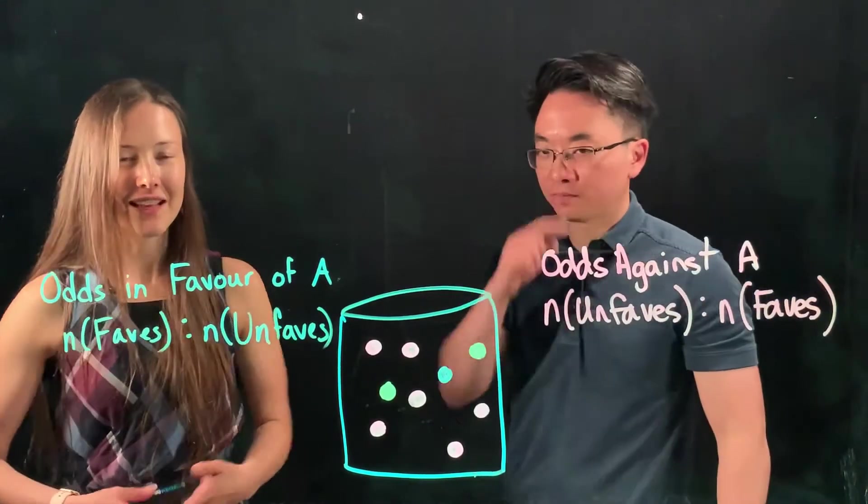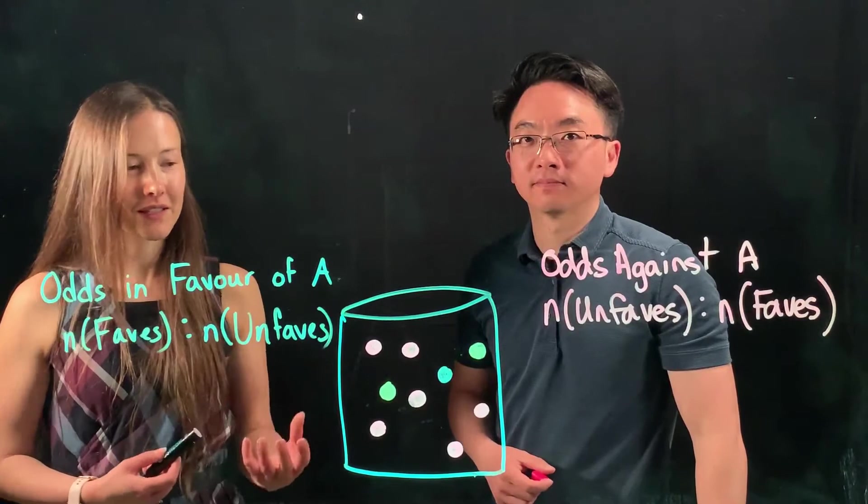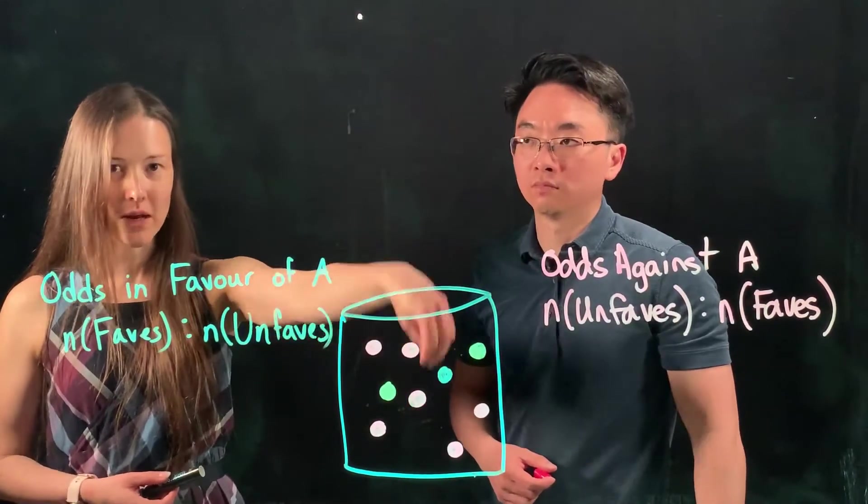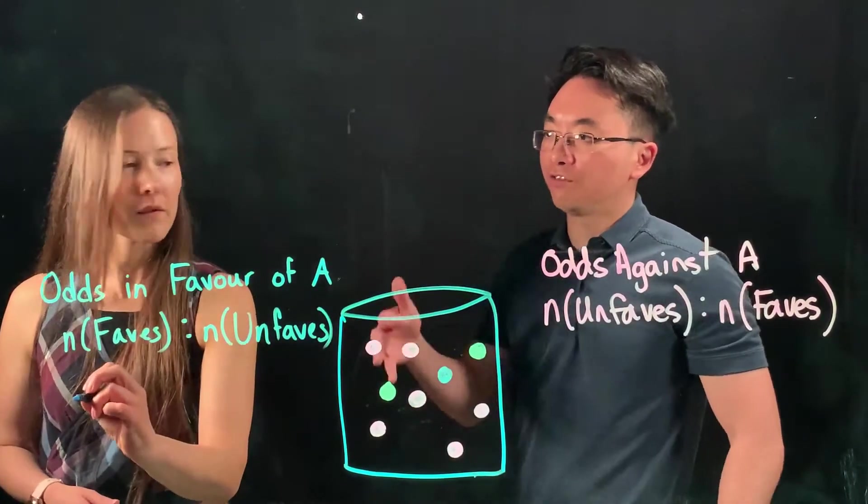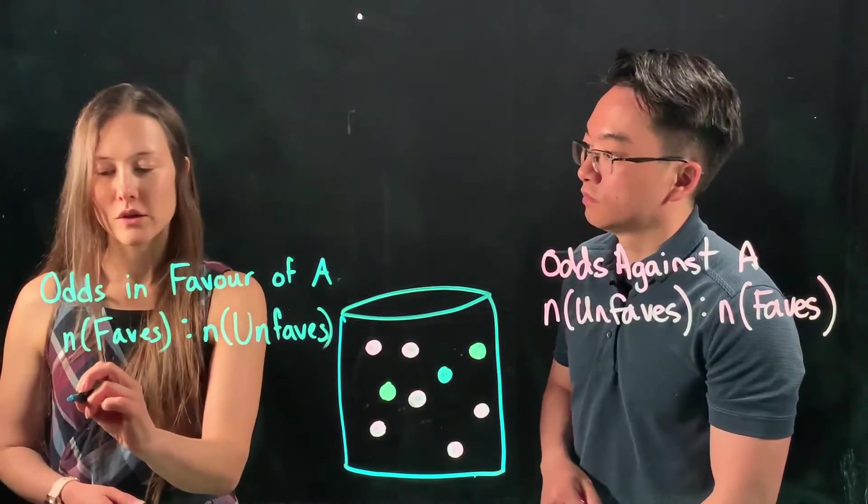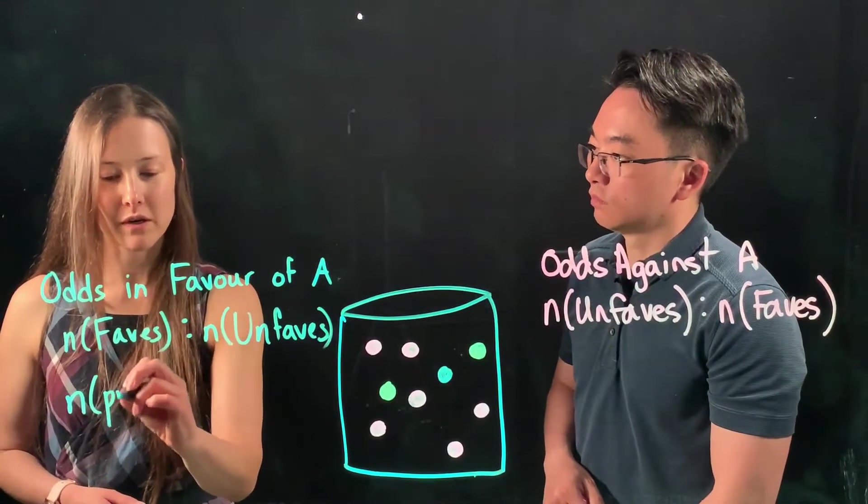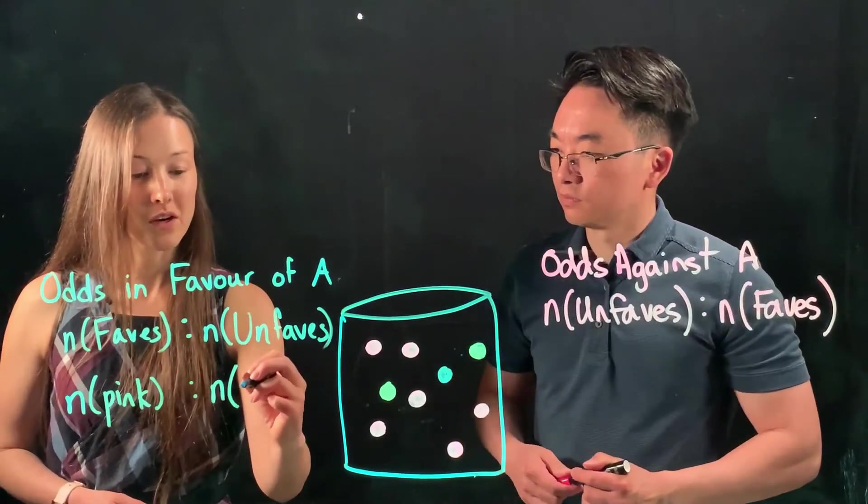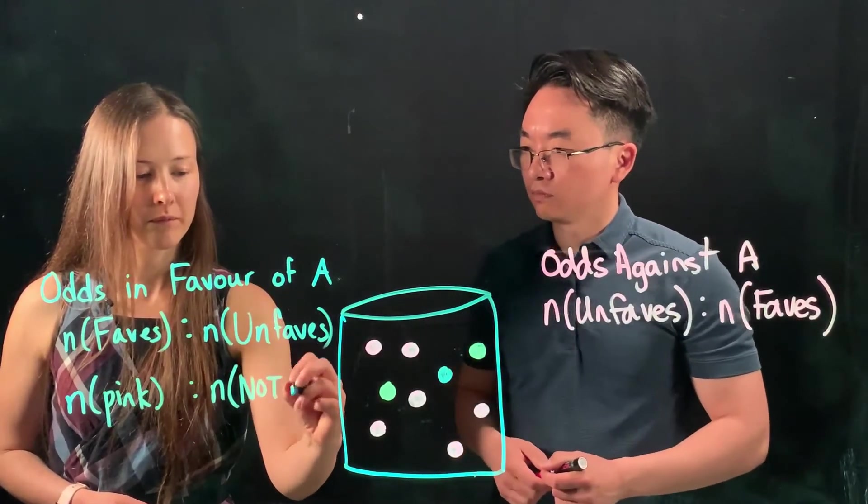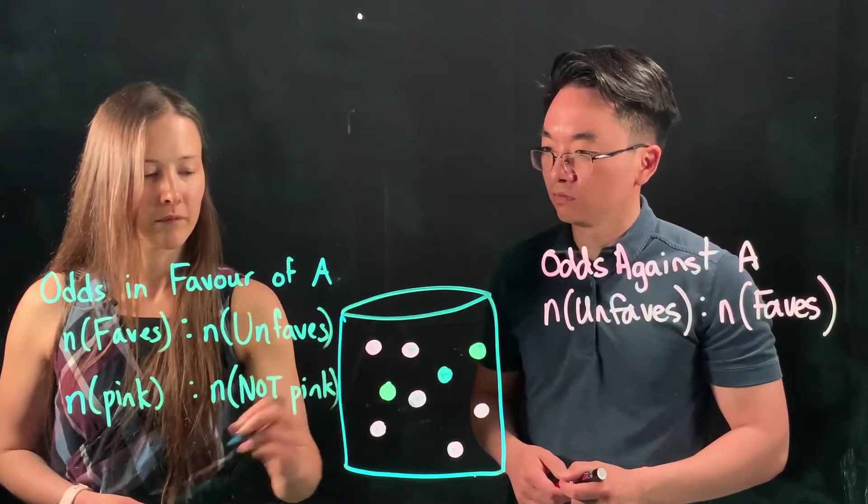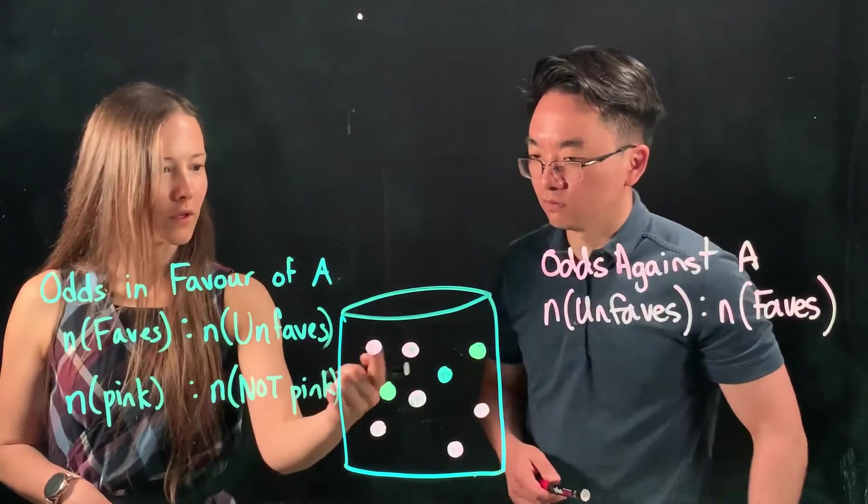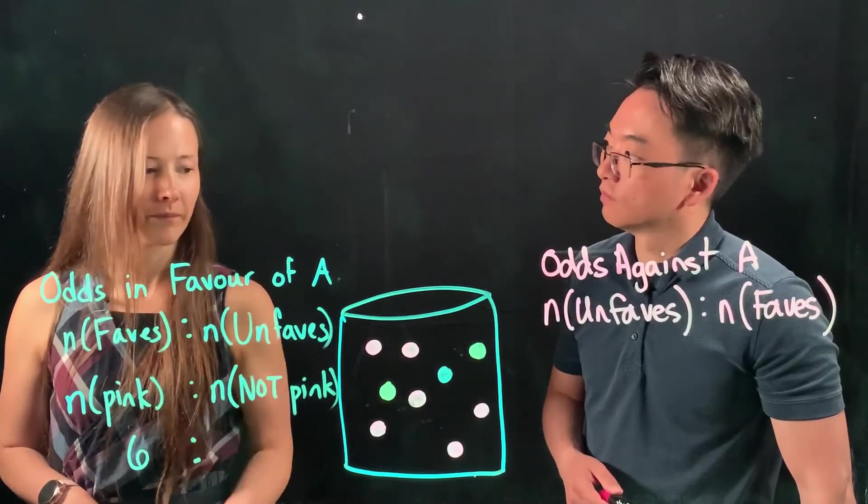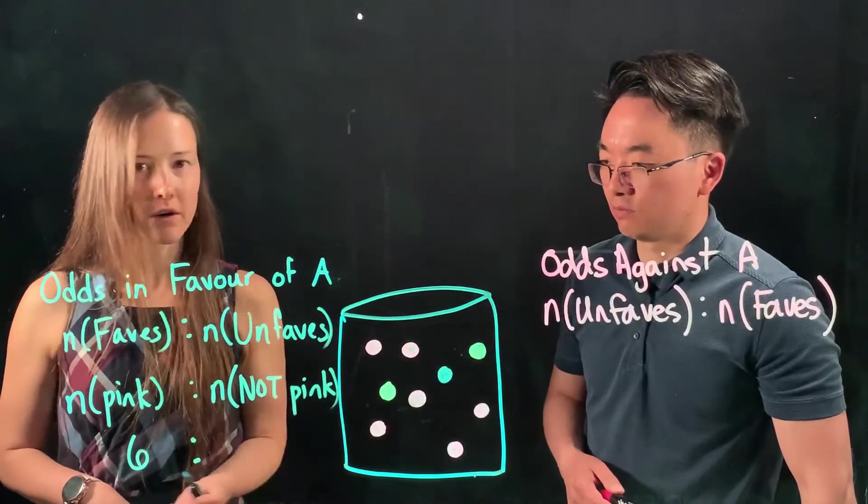Sounds good. Let's calculate the odds in favor of selecting a pink marble, assuming that we're just going to reach into this jar and randomly select one marble. So what are the odds in favor of selecting a pink marble? That would be the number of pink marbles that are in that container, the favorable outcomes, compared to the ones that are not pink. So I'm literally just going to count how many of these things are pink: one, two, three, four, five, six marbles that are pink compared to one, two, three that are not pink.